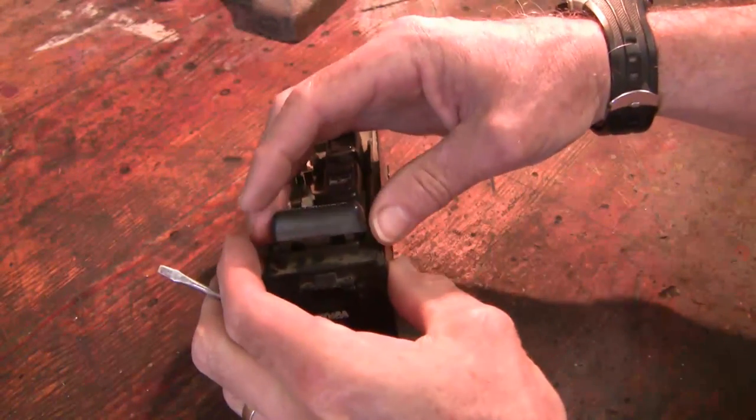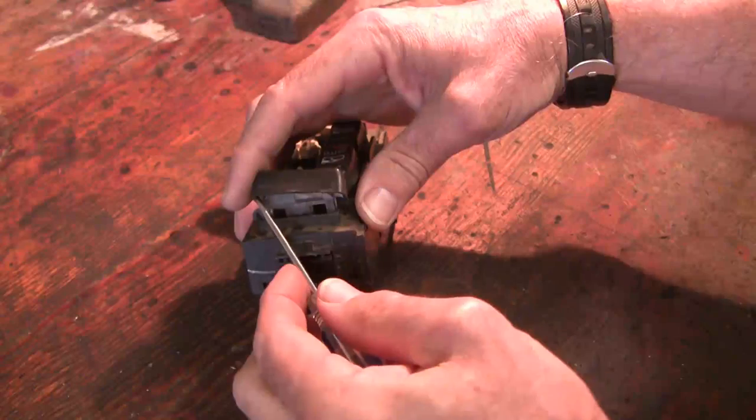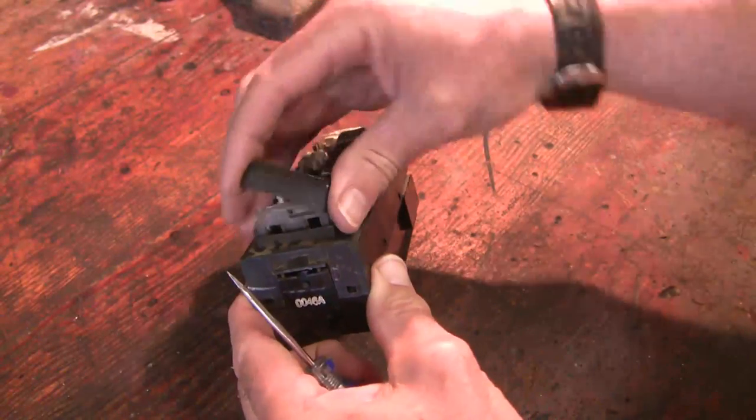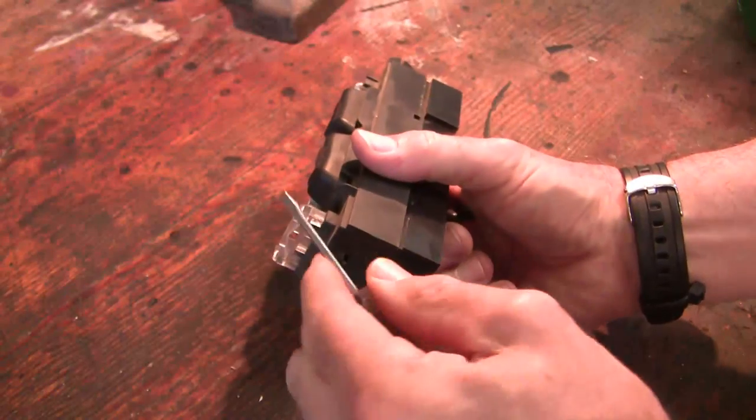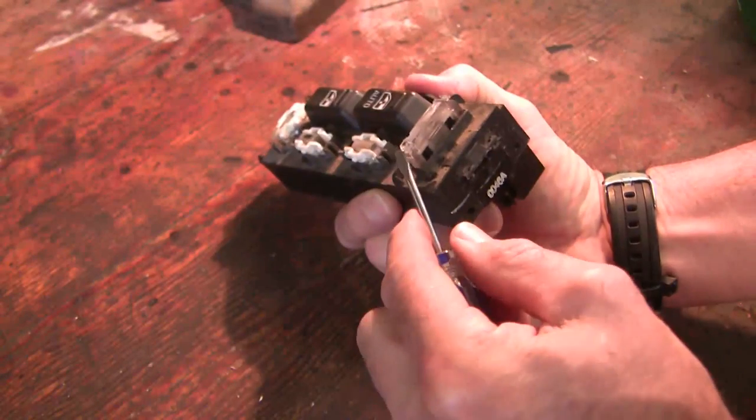You can see that hook pointing inside and this other one. And so, to get this one off, you pry here. And it comes up and over and then pops the other one off like so. Here's the reciprocal hooks there, the mating hooks right there and there.